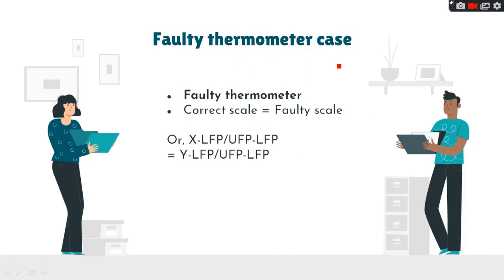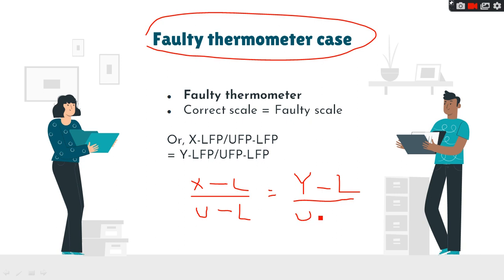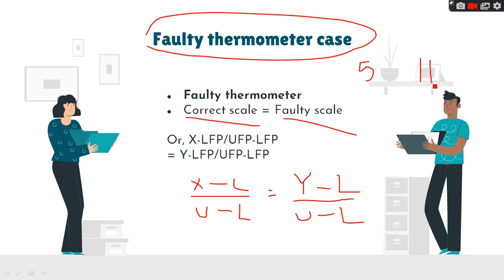The most important topic is the faulty thermometer case. The relation is: (X − lower fixed point) / (upper fixed point − lower fixed point) = (Y − lower fixed point) / (upper fixed point − lower fixed point), where the left side is the correct scale and the right side is the faulty scale.